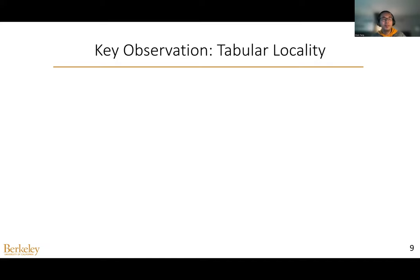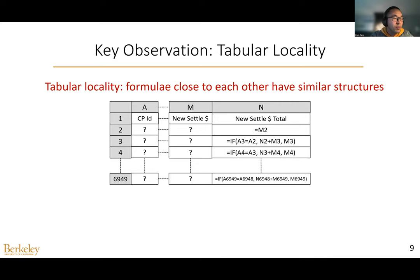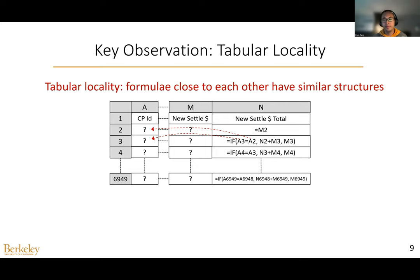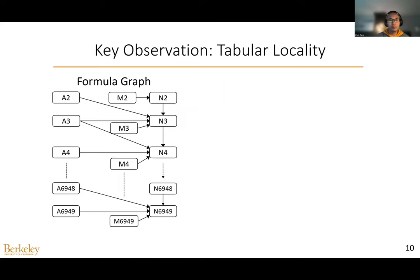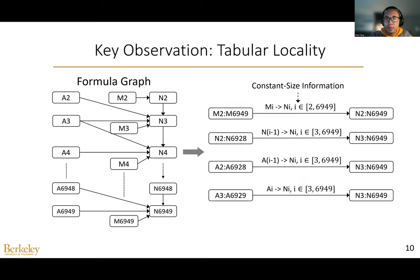Interestingly, we can exploit a key property in spreadsheets, which we call tabular locality, to compress the formula graphs and reduce the time for querying the graphs. This property means that formulas close to each other have similar structures. Consider this example: the formulas starting from N3 follow the same pattern, where each formula references the cell in the same row or the row above in column A, then references the cell to the left and the cell above. Therefore, we can compress this formula graph into four edges, where each edge stores constant-size information for restoring the uncompressed edges.